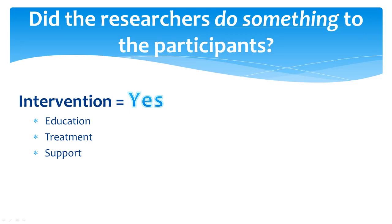You may also see research texts call this a manipulation. Essentially, the researcher did something to people to provoke some kind of measurable result. If the answer is yes, there was an intervention, then the study is either quasi-experimental or experimental.